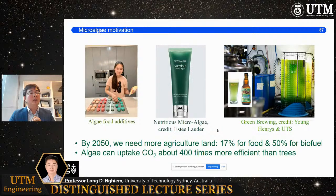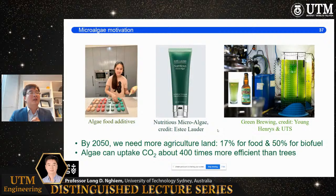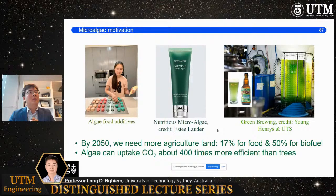But in fact most micro-algae are very useful. From micro-algae you can convert the biochemicals you harvest into food additives, cosmetic products — you can even produce beer from micro-algae. We at UTS work with Young Henrys brewery and they are very interested in using micro-algae to absorb CO2 to offset the CO2 emission from their production process. The advantages of micro-algae are numerous: they grow very fast and can uptake CO2 about 400 times more efficiently than trees because they are individual cells and grow very fast.